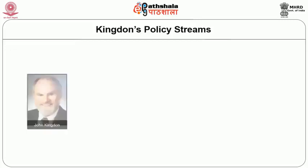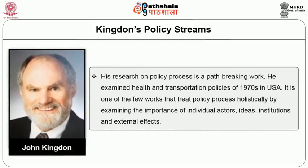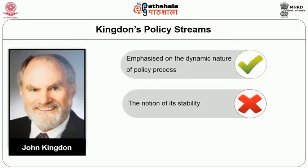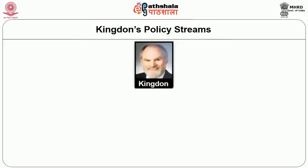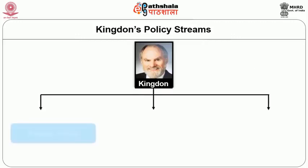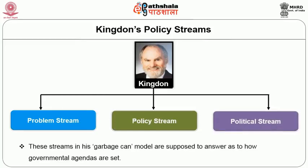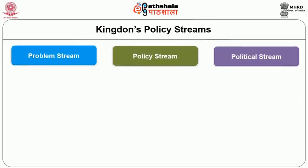Now, Kingdon's policy streams. John Kingdon's research on policy process is a path-breaking work. He examined health and transportation policies of the 1970s in the USA. It is one of the few works that treat policy process holistically by examining the importance of individual actors, ideas, institutions, and external effects. Kingdon emphasized the dynamic nature of policy process and rejected the notion of its stability. According to him, policy outcomes were a result of the continual interplay of all elements in the policy process. To answer the basic questions relating to agenda setting, Kingdon came up with three streams of processes: problems, policies, and politics. These streams in his garbage can model are supposed to answer how governmental agendas are set.